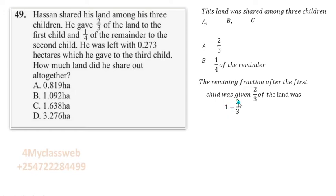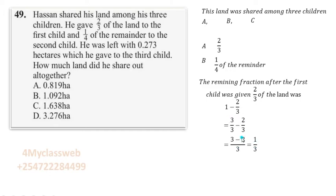To get this remaining fraction after the first child was given two-thirds of the land, we take the whole piece of land and subtract what the first child got: 1 minus 2/3. This one here represents the whole piece of land. The whole piece of land is 3/3, which simplifies to 1. With a common denominator of 3, we subtract the numerators directly: 3 minus 2 gives us 1 over 3. Therefore, the remaining piece of land was just one-third.